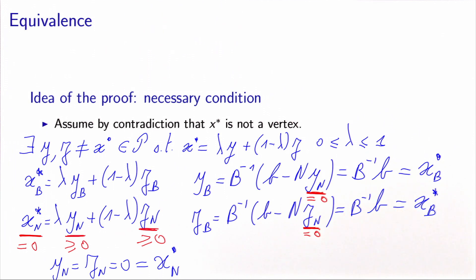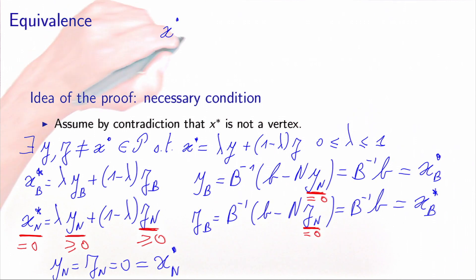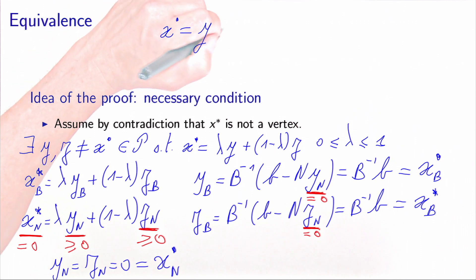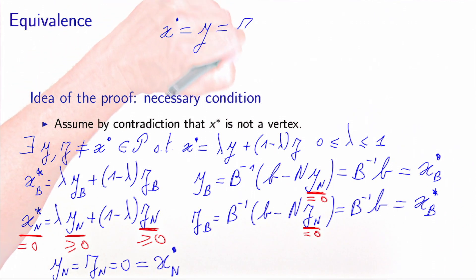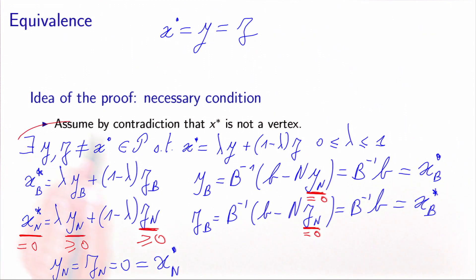Combining both parts, we have shown that x* equals y and x* equals z. But we chose y and z to be different from x* — this is where we reach the contradiction. So x* has to be a vertex, and we have finished the proof.